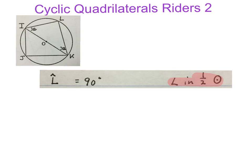Here is our next rider. We have a circle with a cyclic quadrilateral inside it and a diameter running through O, the center. We know that angle L is equal to 90 degrees — angles in a semicircle. There is the diameter and it is an angle in a semicircle.